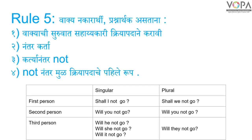For example, negative interrogative sentences: Shall I not go? Shall we not go? Will you not go? Will he not go? Will she not go? Will it not go? Will they not go?